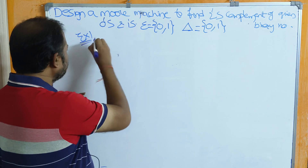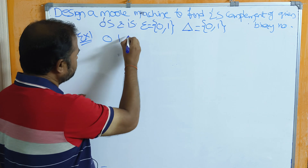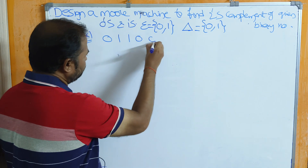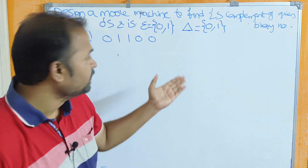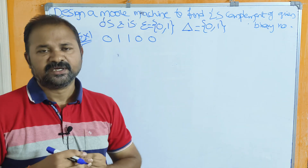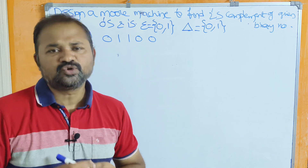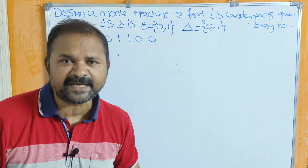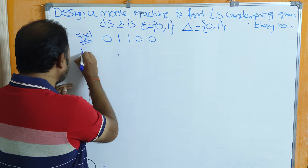Example number 1: Let the number be 0 1 1 0 0. Let this be our binary number. Let us calculate the 2's complement of this number. We know the formula: 2's complement equals 1's complement plus 1. So first let us calculate the 1's complement.